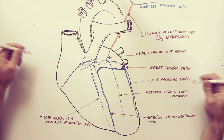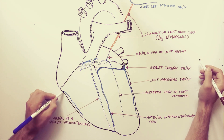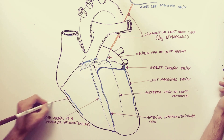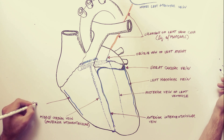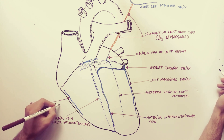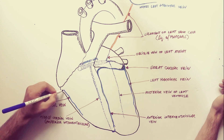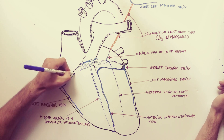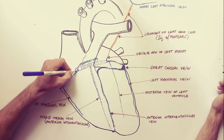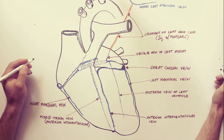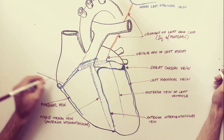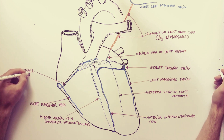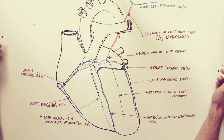The small cardiac vein, although very variable, typically begins anteriorly close to the apex and runs to the right, a little above the right margin of the heart. The portion located above the right margin of the heart is called the right marginal vein. After meeting the right coronary sulcus, the small cardiac vein turns around the right border of the heart with the right coronary artery and enters the terminal portion of the coronary sinus. It receives tributaries from the right ventricle and right atrium.